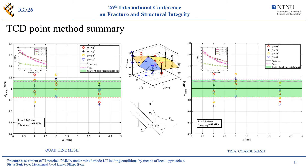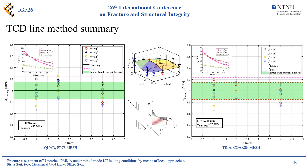In this slide, you can see the test data summarized through the TCD point method. Also for this method, no appreciable difference can be noticed between the results obtained with the two different models. Also in this case, the data are below the theoretical value for fracture. Having considered the material as brittle, the ultimate tensile strength is equal to the inherent stress, that is the critical stress value according to the TCD method. Applying the TCD line method, no considerable difference can be noticed between the results obtained with the two different models. It is, however, worth noting that, considering the line method, the results obtained are lower with respect to the point method. This can be noticed through the ultimate tensile strength values reported in the graphs.